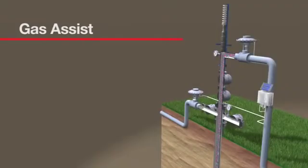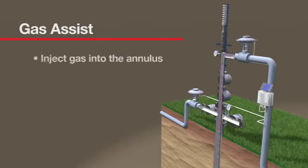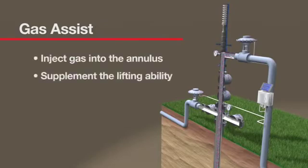Some plunger lift candidates lack the sufficient amount of gas needed to run a plunger. Utilizing an outside source to inject gas into the annulus allows the operator to supplement the lifting ability of the plunger.